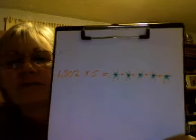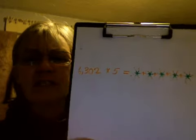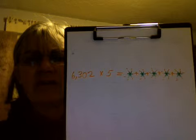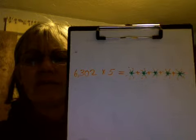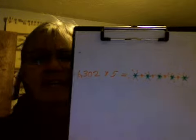We'll use this for an example. We have this equation 6,302 times 5 equals snowflake plus snowflake plus snowflake plus snowflake plus snowflake.